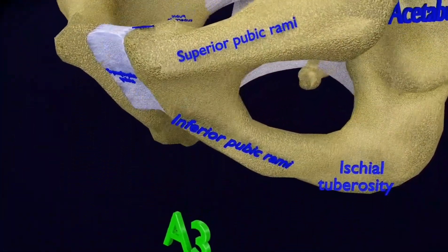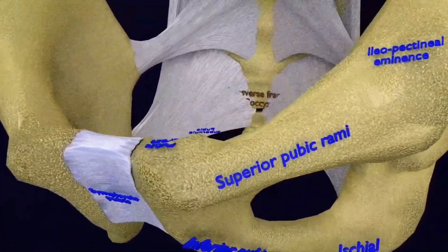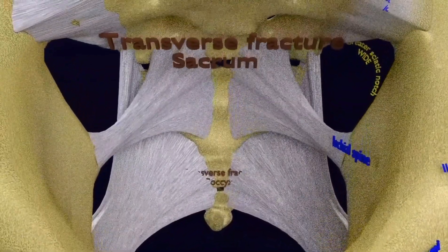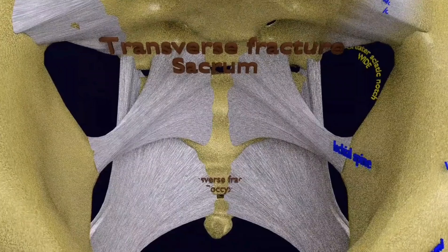In type 3 of Tile classification, the fracture is near the sacrococcygeal region or the sacrum region.